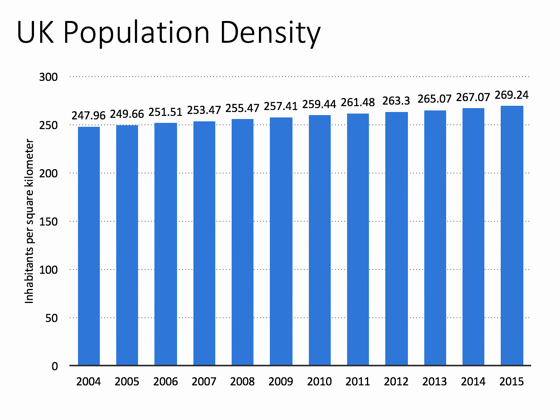What does this population growth mean for density? The evidence is that UK population density has nudged higher — from about 250 inhabitants per square kilometre in 2004 to just under 270 inhabitants per square kilometre in 2015.